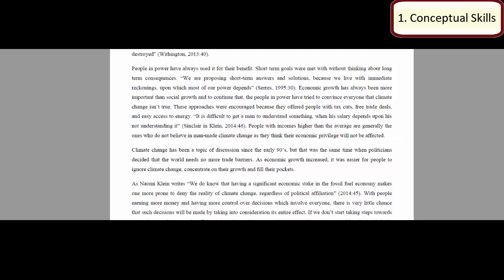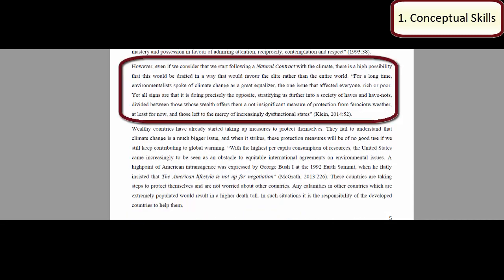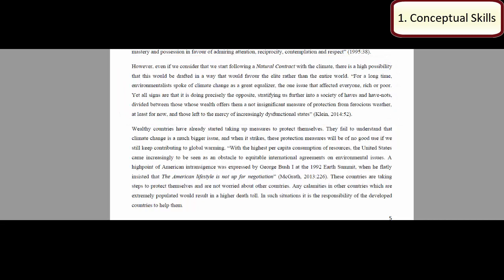A little further down the page, we see the paragraph that starts: 'However, even if we consider that we start following a natural contract with the climate, there is a high possibility that this would be drafted in a way that would favour the elite rather than the entire world.' This is not something that Michel Serres says in his text, but through reading the Naomi Klein argument around climate justice, she's able to reach this conclusion herself. That shows a very sophisticated understanding of the issues. This relates to the conceptual skills assessment criteria — she's really engaging with the theory of the natural contract and climate justice, interrogating them in her own terms and making those connections for herself. Michel Serres does not talk about climate justice in the way that Naomi Klein does, so she's really constructing this in her work.